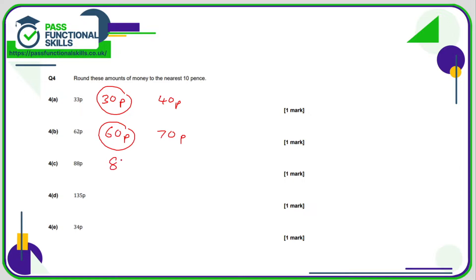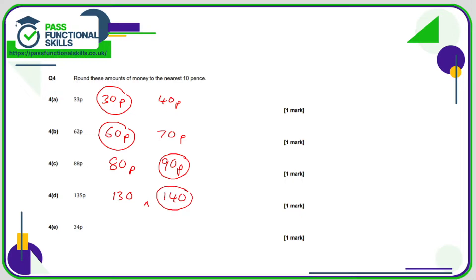88p is between 80 and 90 pence; 88 is greater than 85 which is the midpoint, so we round up to 90. 135p is between 130 and 140. Now 135 is exactly halfway between 130 and 140, so we round up — we always round up if it's halfway. 34 pence is between 30 and 40; since 34 is less than 35 (the midpoint) we round down to 30p.